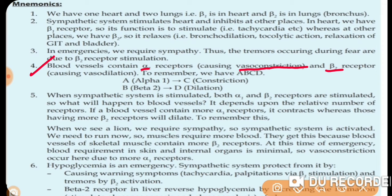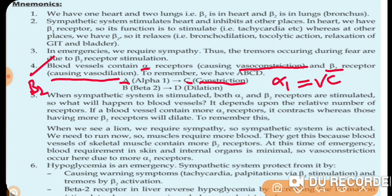Beta-2 receptors in blood vessels cause vasodilation. A mnemonic to remember this: ABCD — A for alpha-1 relates to C for constriction, so alpha-1 receptors in blood vessels cause vasoconstriction. B for beta-2 relates to D for dilation, so beta-2 receptors in blood vessels cause vasodilation.